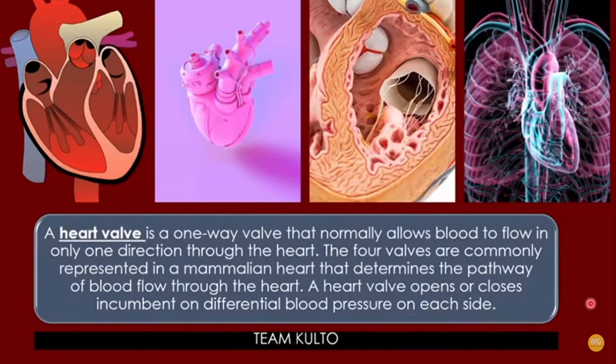Now, a heart valve is a one-way valve that normally allows blood to flow in only one direction through the heart. The four valves are commonly represented in a mammalian heart that determines the pathway of blood flow through the heart. A heart valve opens or closes incumbent on differential blood pressure on each side.